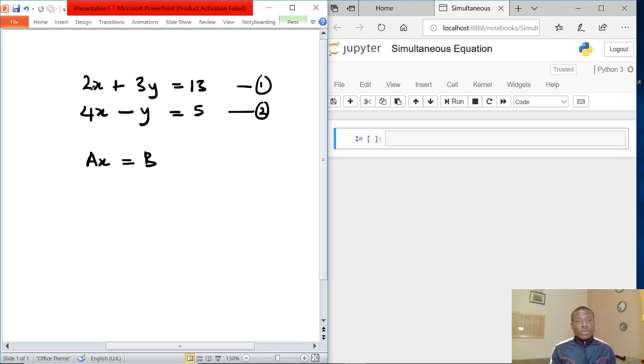What we have here is that A represents the coefficients of the simultaneous equation you want to solve. So the coefficient is 2, 3, 4, minus 1, right? And here we have the result matrix: 13 and 5. So we can write A as 2, 3, 4 and minus 1.